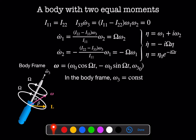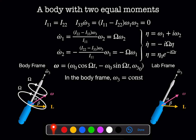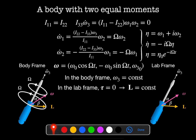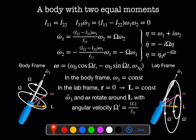That's what it looks like from a camera stuck to the body. In the lab frame, torque equals zero, which means we have constant angular momentum. That means both omega-3 and omega rotate around the angular momentum direction with some angular velocity omega-prime, equal to the magnitude of the angular momentum divided by i11.